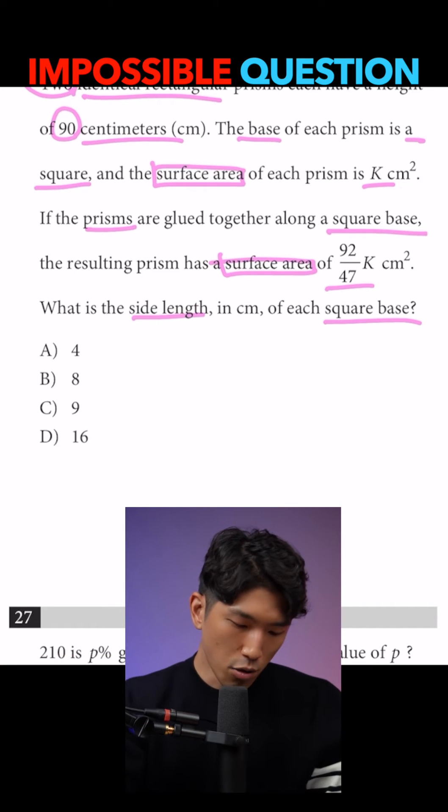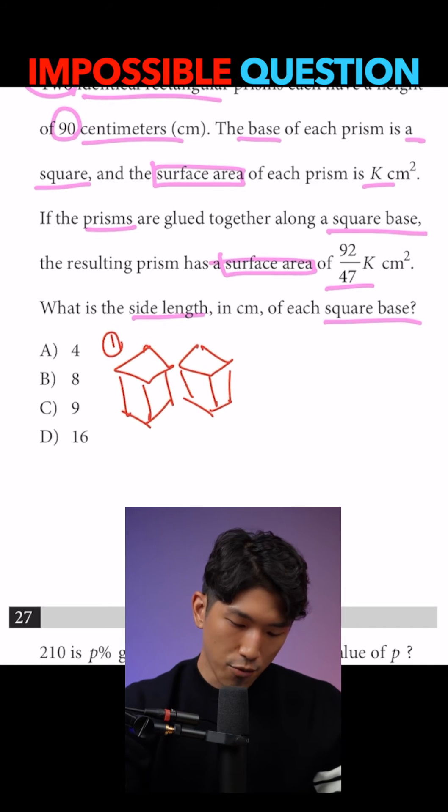So always draw stuff out. First, we have two rectangular prisms that are right next to each other. And second, we have another situation where we have these two prisms stacked on top of each other.